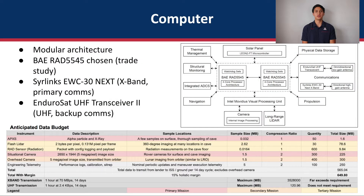The computer subsystem features a modular architecture at the heart of which are two VAE RAD5545 system monitor processors. This subsystem interfaces closely with the communication subsystem, which has X-band and UHF to transmit the data budget shown below.